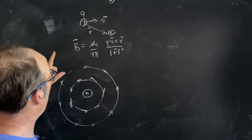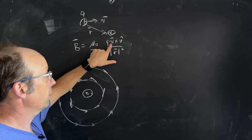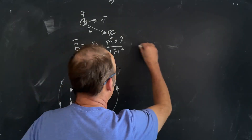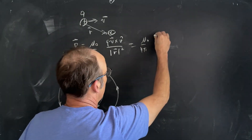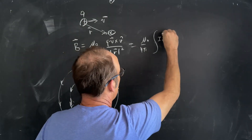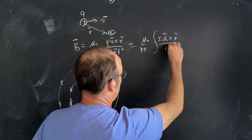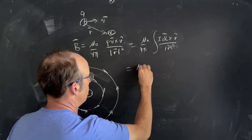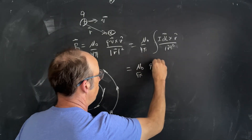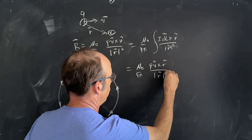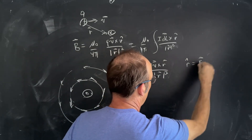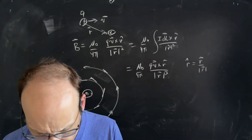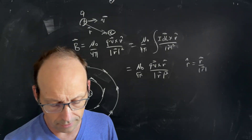What if I have a wire and I want to find the magnetic field? We can replace QV with I·DL, but that means I have to integrate over the length of the wire. So the magnetic field due to a wire is (μ₀/4π) times the integral of I·DL cross R̂ over the magnitude of R squared. You could also write this as μ₀/4π times Q·V cross R over |R| cubed, because R̂ = R / |R|.